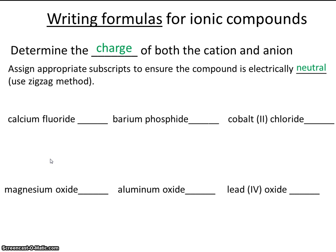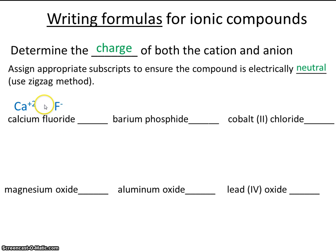You'll need your periodic table. Remember, on top of each group there's a number written, and that number tells you the charge of those atoms when they form ions. For example, calcium always has a charge of plus 2, because in group 2 on your periodic table you've written plus 2. And fluoride always has a charge of minus 1, because on the far right of your periodic table, where fluorine is found in that group or family, you've written minus 1.